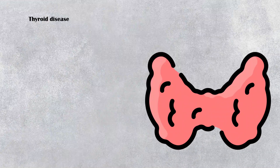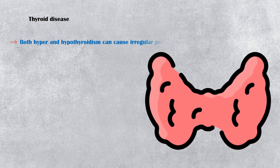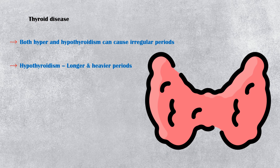Thyroid disease. Both hyper- and hypothyroidism can cause irregular periods. Hypothyroidism can cause longer and heavier periods, whereas hyperthyroidism can cause shorter and lighter periods.